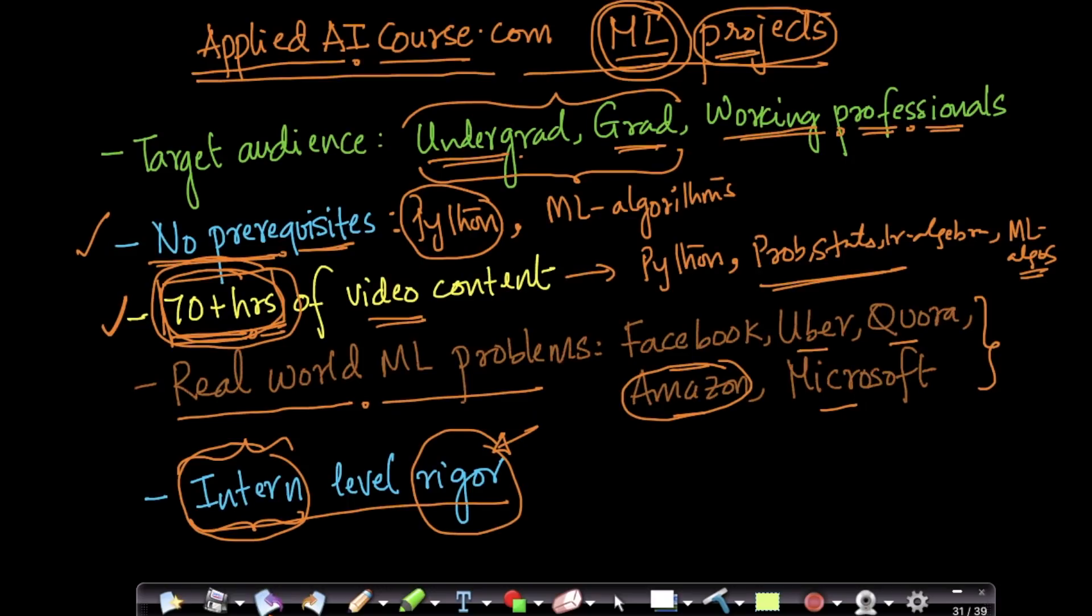At the end of the day our objective is very clear. Our objective is to help undergraduate, graduate students and working professionals solve world-class, real world machine learning problems to a very nice rigor and we want to teach them everything, not just give them a solution, but we want to teach them all the internals, all the basics before they solve a full-fledged machine learning project. Thank you.